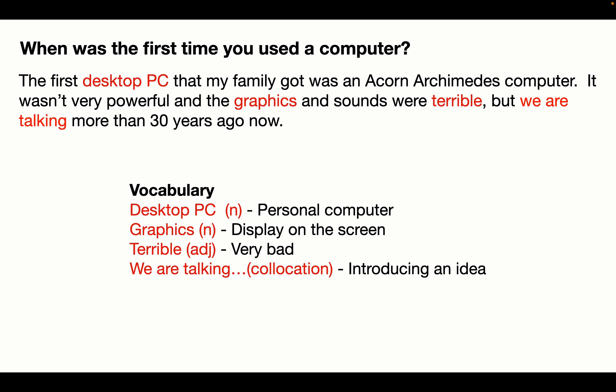'Graphics' is a noun — that's the display on the screen, the things you can see on the screen and how good they are. 'Terrible' is a good adjective to use instead of 'bad' — it means very bad, awful, not great. And 'we are talking' — as in 'we are talking more than 30 years ago now' — it's a collocation used to introduce something you're talking about.